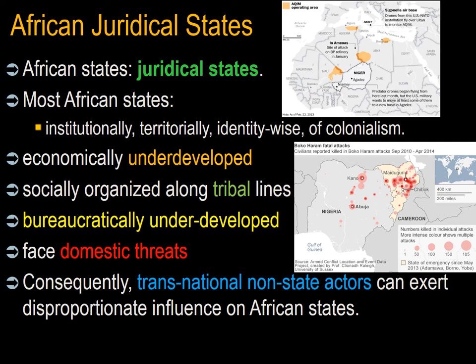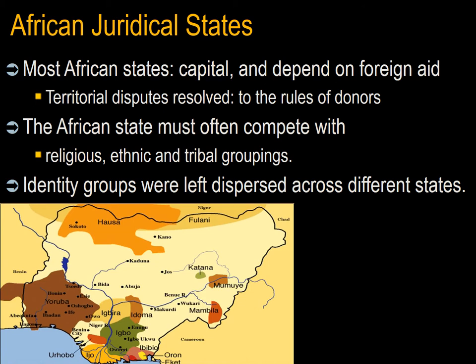Consequently, transnational non-state actors can exert disproportionate influence on African states — for example, groups like AQIM (Al Qaeda in the Islamic Maghreb), Boko Haram in Nigeria, and the Lord's Resistance Army in Uganda and surrounding states. Most African states are therefore centered around the capital and depend on foreign assistance — particularly foreign aid — from wealthier states and international institutions. These states are termed juridical because inter-African state territorial disputes are more likely to be resolved according to the rules and procedures of donors and their international institutions than as a result of the state's own military action.